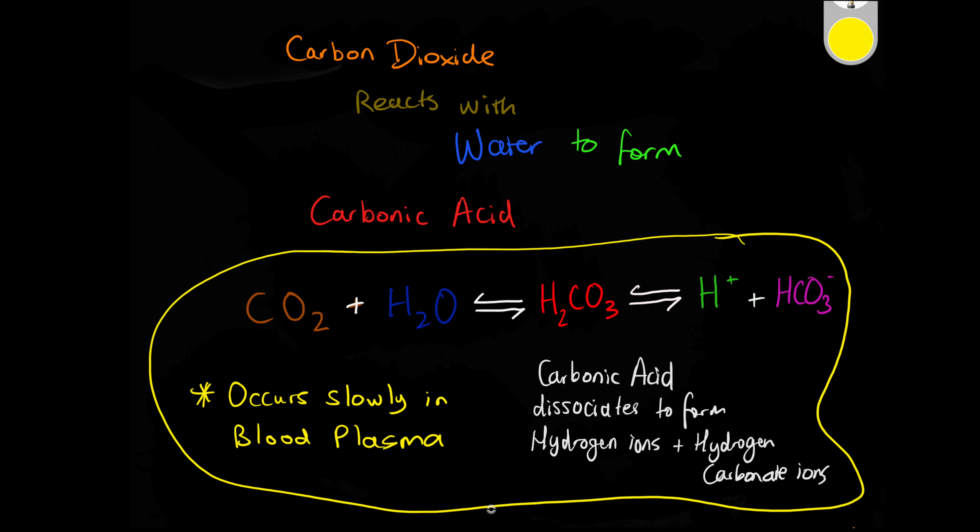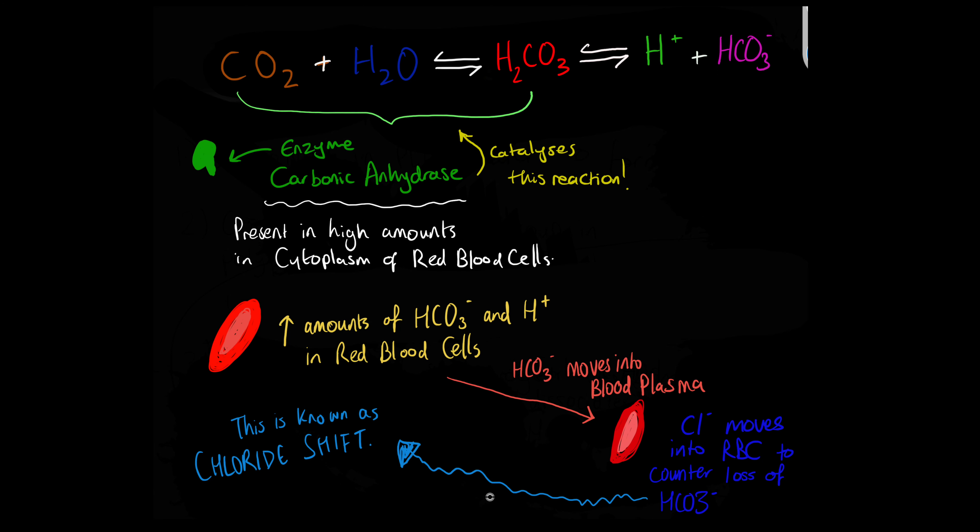This process happens slowly in blood plasma. The cytoplasm of red blood cells contain a high amount of the enzyme carbonic anhydrase. This enzyme catalyzes the reversible reaction between carbon dioxide and water to form carbonic acid.